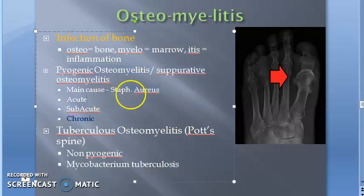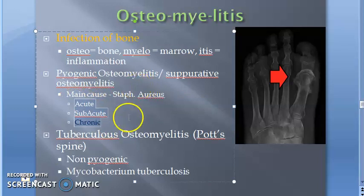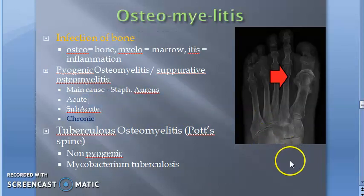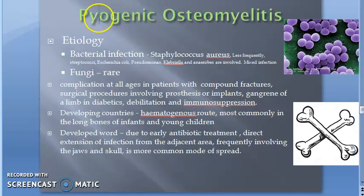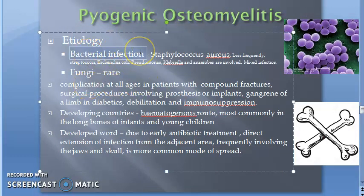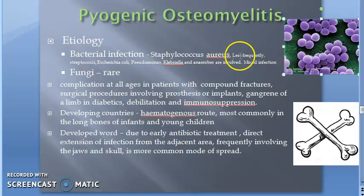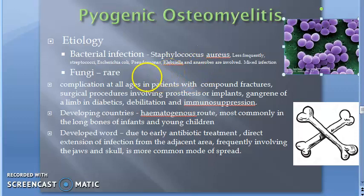Let's go into the details of pyogenic osteomyelitis — etiology. Mainly it is bacterial infection. Staphylococcus aureus is the primary cause. Less frequently there can be streptococcal infection, E. coli, Pseudomonas, Klebsiella, or anaerobes — even mixed infections. But you should not forget Staphylococcus aureus. Streptococcus is also possible but less frequent.